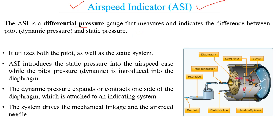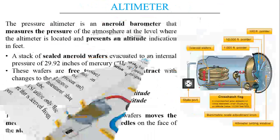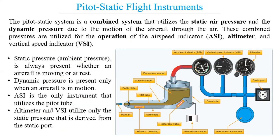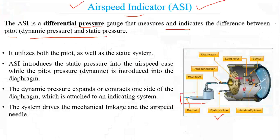The airspeed indicator is a differential pressure gauge that measures and indicates the difference between dynamic pressure — or pitot pressure — and static pressure. The airspeed indicator obtains its source from two particular points: it obtains a value from the pitot tube and also obtains a value from the static airline. We can see that the airspeed indicator receives pressure from two sources — the pitot source shown in red and the static source shown in blue.